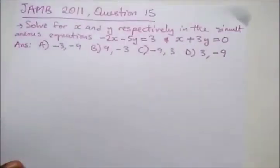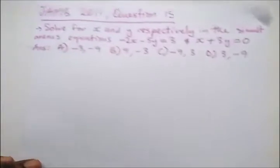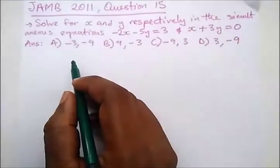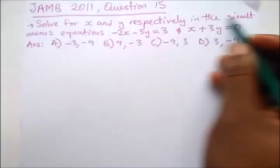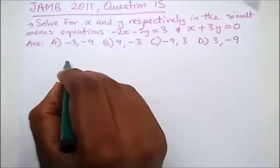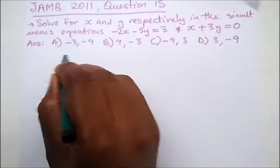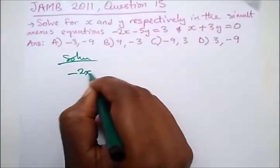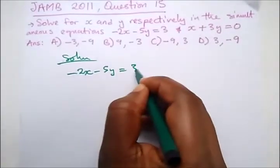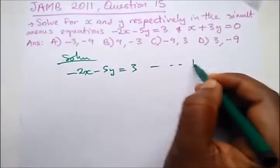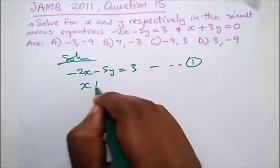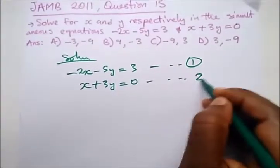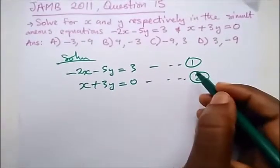Here we have another question from JAMB 2011, question 15. It says solve for x respectively in the simultaneous equation. We have equation 1: minus 2x minus 5y equals 3, and equation 2: x plus 3y equals 0.